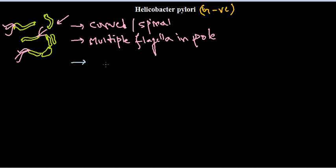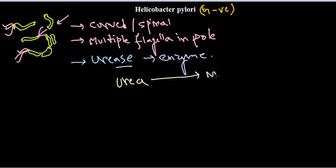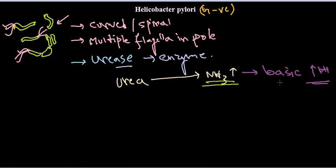The most important and significant property of Helicobacter pylori is that it can produce urease, which is an enzyme. This enzyme has the property to convert urea into ammonia. This ammonia can react with water to make ammonium hydroxide. Because ammonia is basic in nature — meaning high pH — it will increase the pH of the medium.